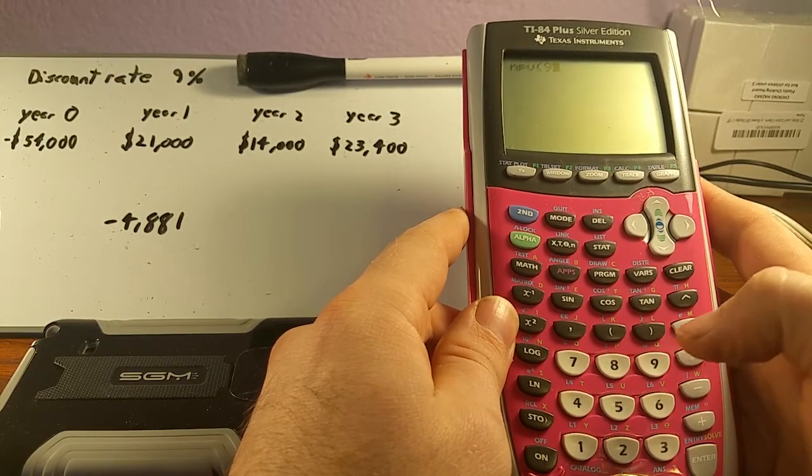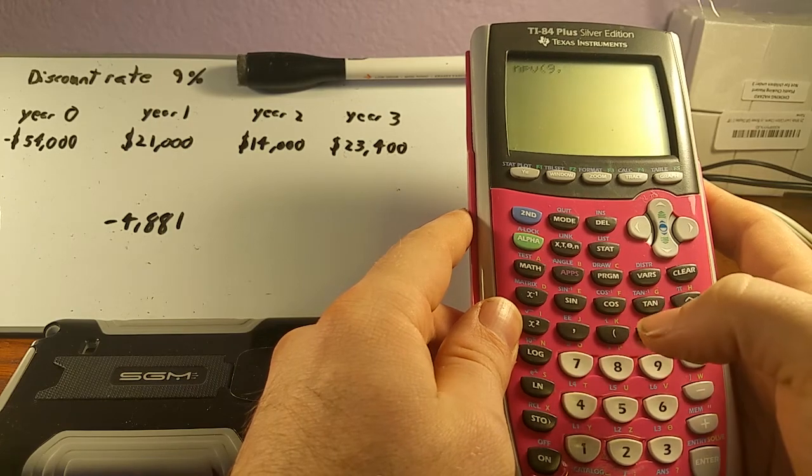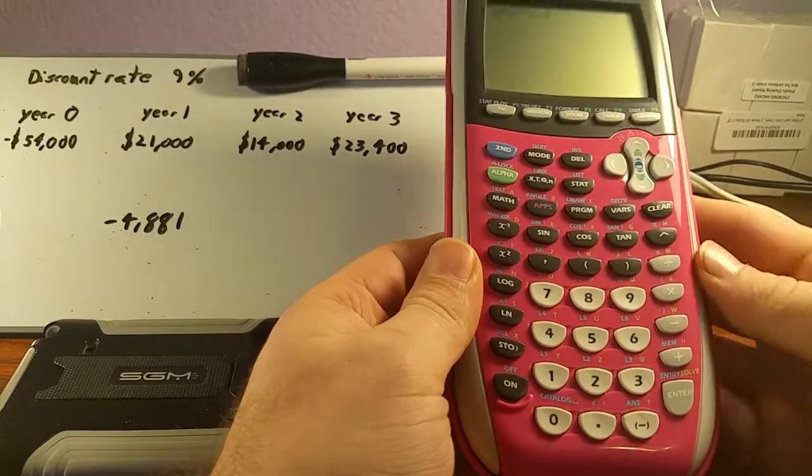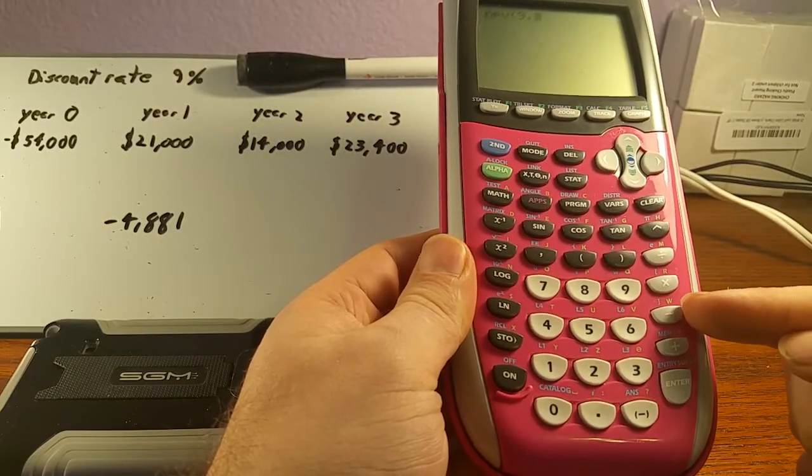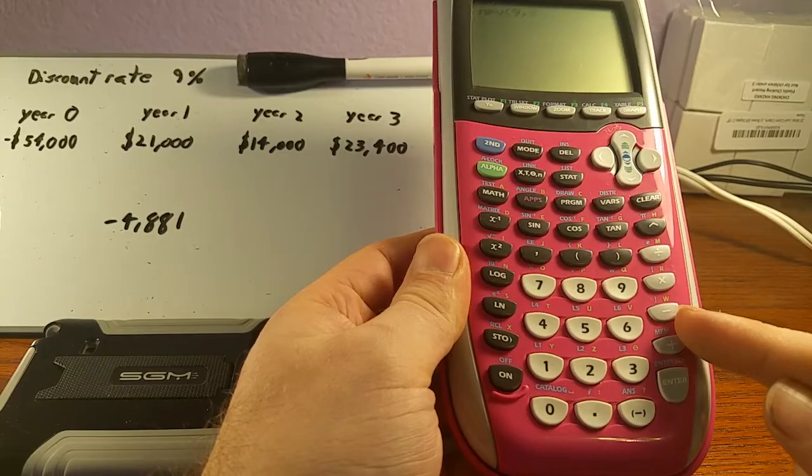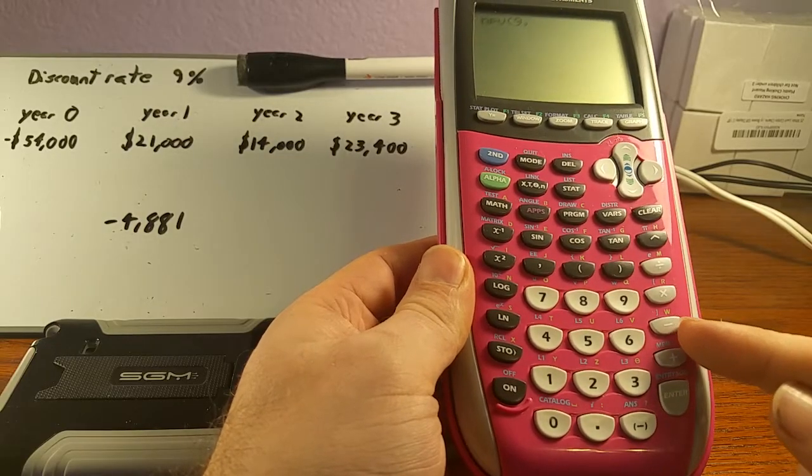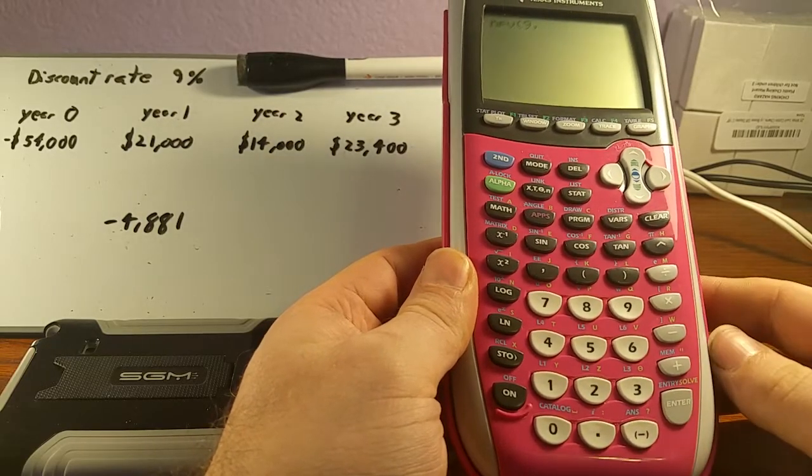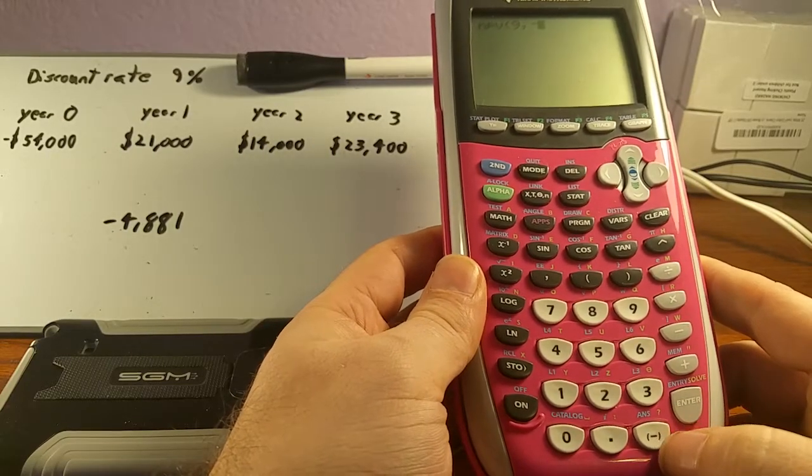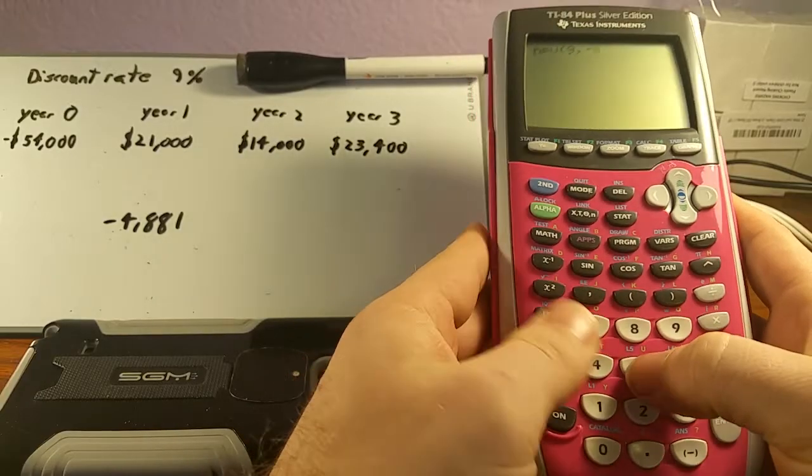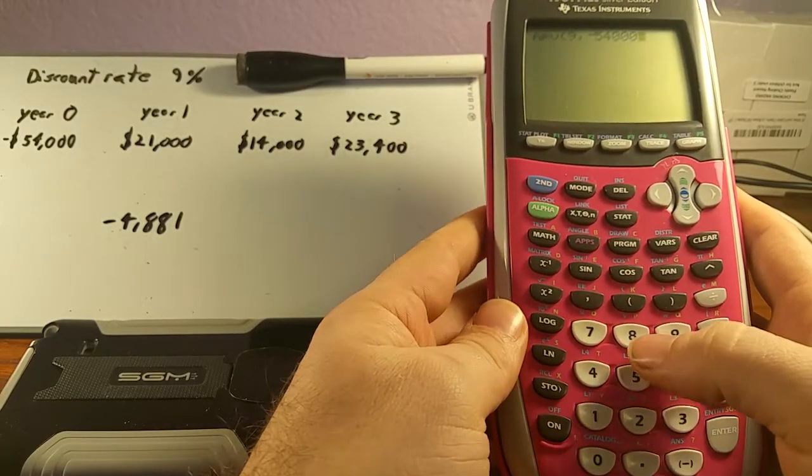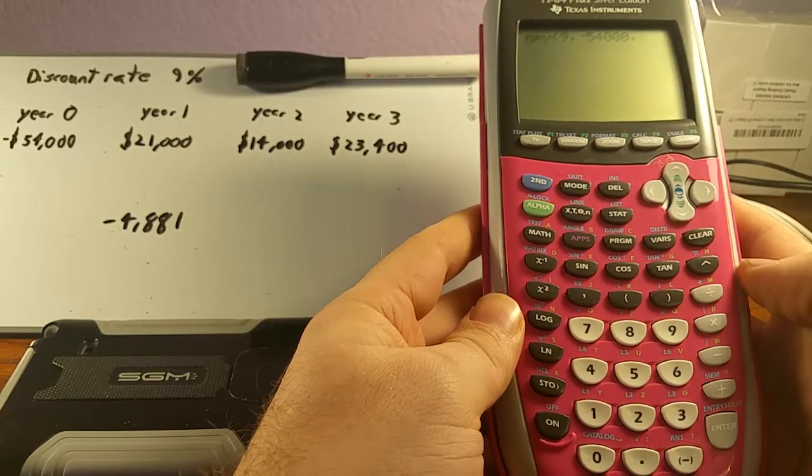Let's go with our formula here. So 9%, we're just going to hit our 9, and then we're going to separate that by our comma. The next part is going to be how much we spend. Now, it's very important that you don't confuse this subtract button with this negative button. If you use the subtract button, you will get an error at the end. So we'll start with our negative button here, and then we're going to say how much we spent. That's $54,000, and then comma to go to the next section.